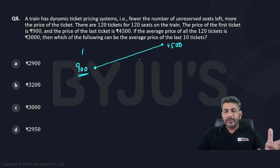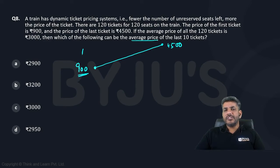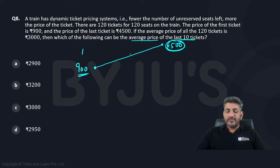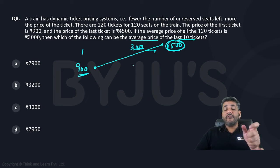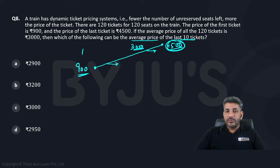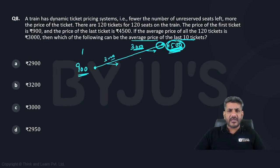The average would be somewhere between 900 and 4500 for sure. But the question is asking which of the following can be the average price of the last 10 tickets? The last ticket is priced at 4500. Wherever the average is — if the average is slightly on this side, suppose here the price is 3000 — all the values are very close to each other. If the last one has a price over here, probably these values are very large and the other values are very small. That is a possibility, so it can lie anywhere.